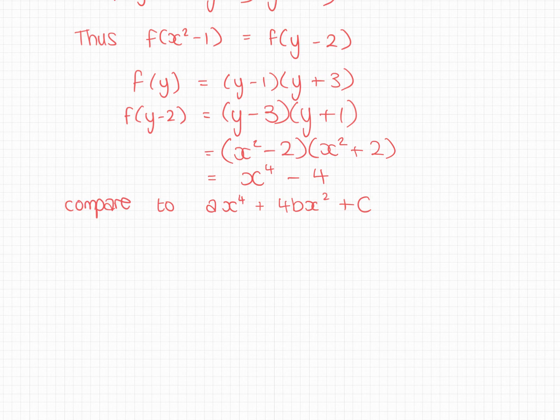And from that, we can see, well, the x4 term here, those are the same. So a must be 1. The x squared terms, I've got 4b here. I've got none here. So 4b must be 0. So b must be 0. And c must be the number part at the end. So c must be minus 4.